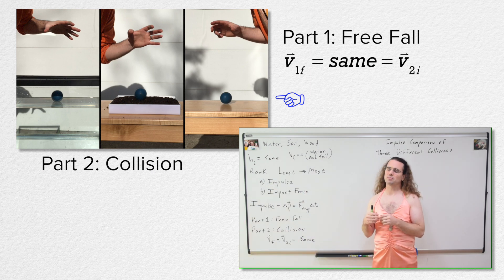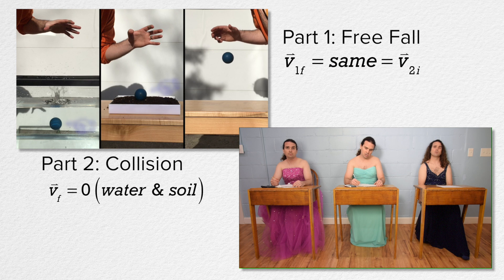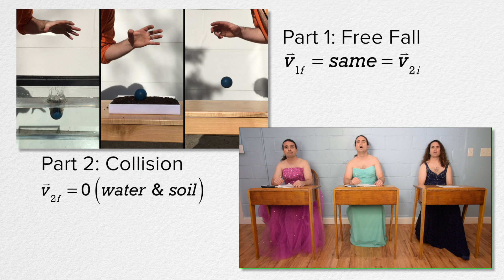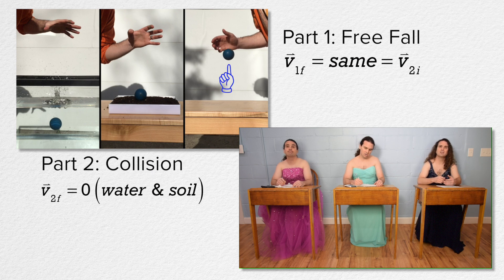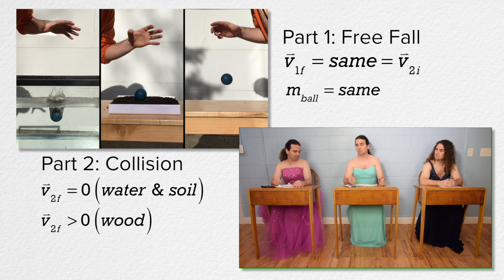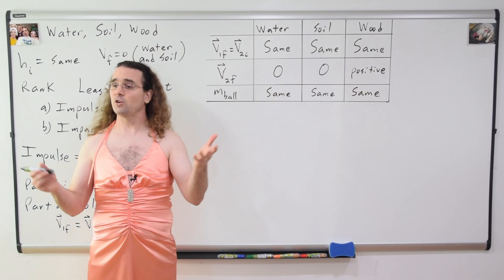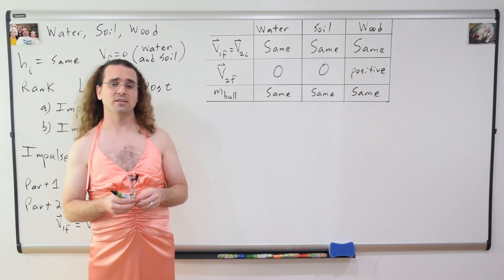Let's talk more about part two of the collisions. We know the ball stopped at the end of part two for both the water and the soil, so the final velocity for part two equals zero for those. However, after colliding with the wood, the ball rebounds to roughly two-thirds its initial height, so the final velocity for part two — as the ball leaves the surface of the wood — must be positive. The racquetball is the same racquetball for each demonstration, so it always has the same mass. It seemed logical to organize this all in a data table.